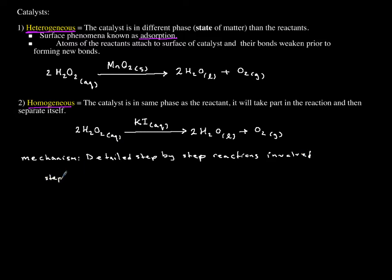So step one: hydrogen peroxide is going to react with my catalyst, and instead of potassium iodide, I'm going to write just iodine. Just remember that potassium iodide aqueous is going to be represented as iodine aqueous because potassium is a spectator ion. That's my catalyst, and then it gets involved in the reaction, gives me one molecule of H2O liquid plus a new species which is IO- aqueous.